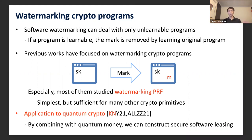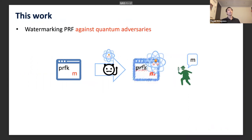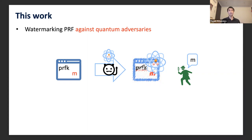By combining watermarking with quantum money, we can construct secure software leasing, which is a variant of copy protection. In this work, we study watermarking PRFs against quantum adversaries. More concretely, our goal is to propose a watermarking scheme such that even if a quantum adversary generates a quantum program in order to remove the embedded mark, we can correctly extract the embedded mark.